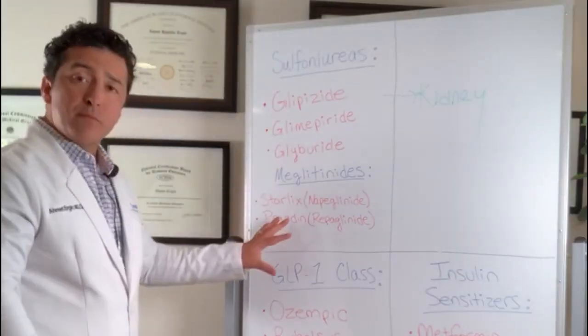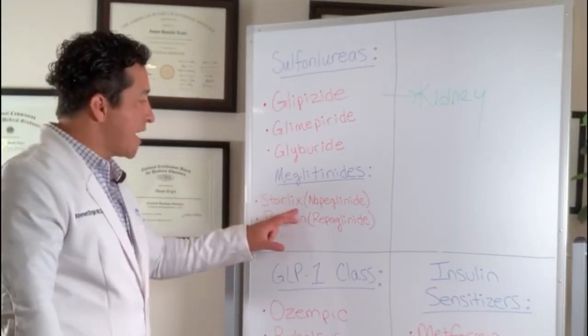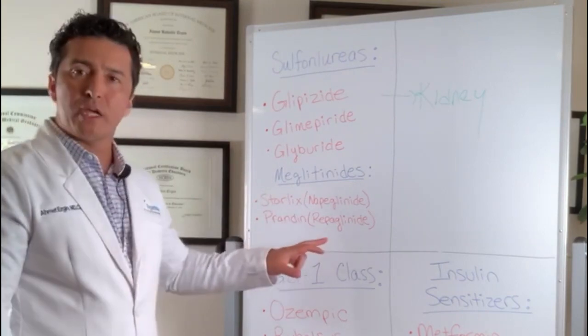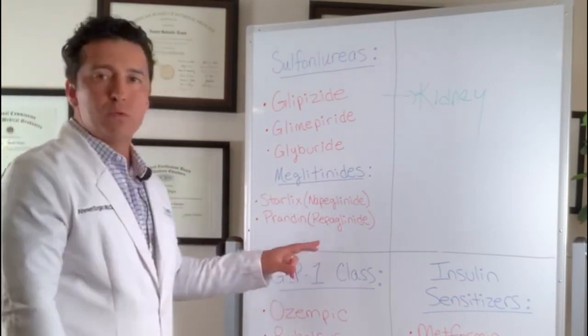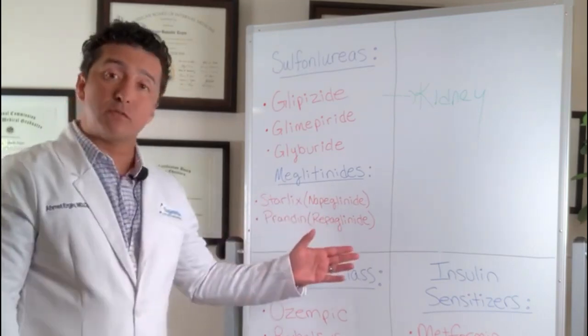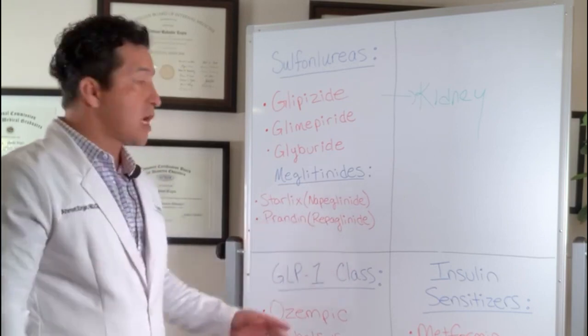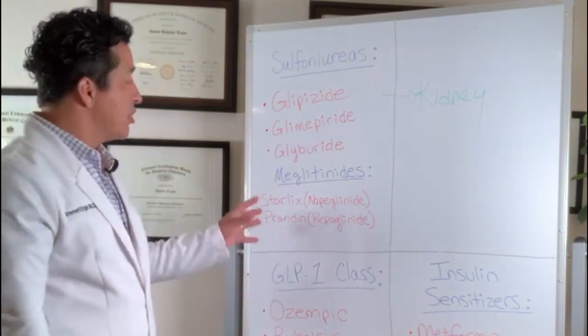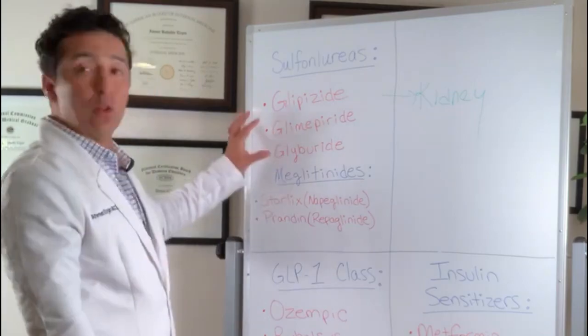So why sometimes we use meglitinides? Because they're shorter acting, but they pretty much do the same thing. Instead of whipping your pancreas 24-7, they're whipping your pancreas for, you know, seven to eight hours. They are still problematic. They are kind of still expensive, to be honest with you. I don't know why they're generic and expensive. That doesn't make any sense. But they still cause weight gain. They can still cause low blood sugars. It's just shorter acting. So they're going to give you a shorter trouble time than a longer trouble time.